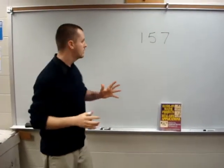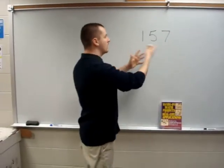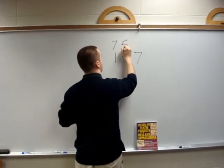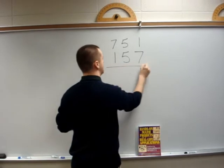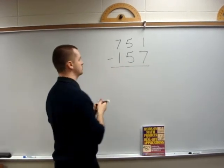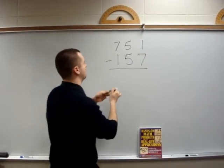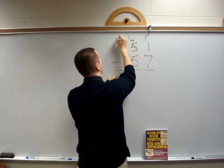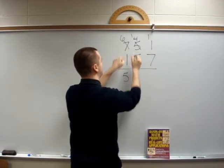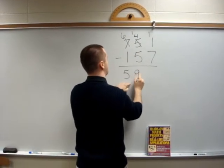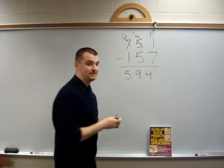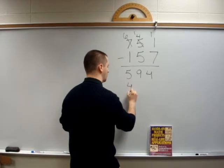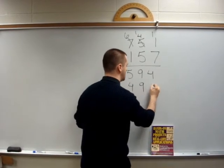Now we're going to do a little math with your random number. I'm going to rearrange the digits and put them in reverse order — so that would be 751. And now we're going to subtract those two numbers. Let's see: borrow one there — we get 594. And again we're going to rearrange the numbers, reversing them to get 495.